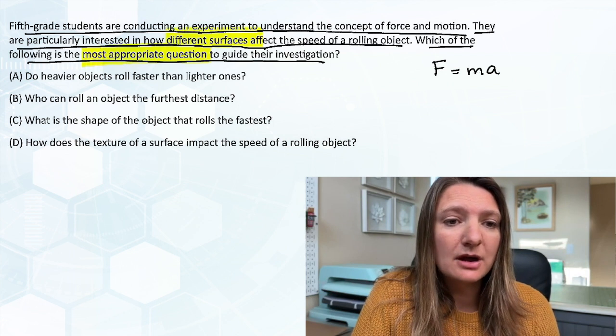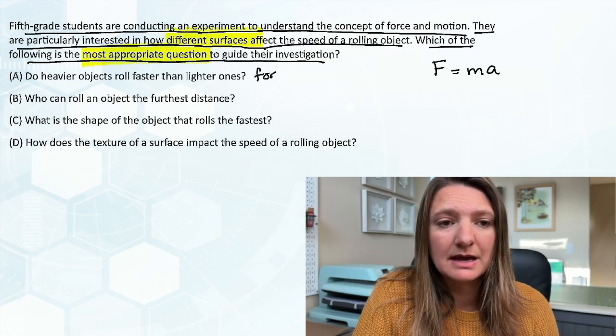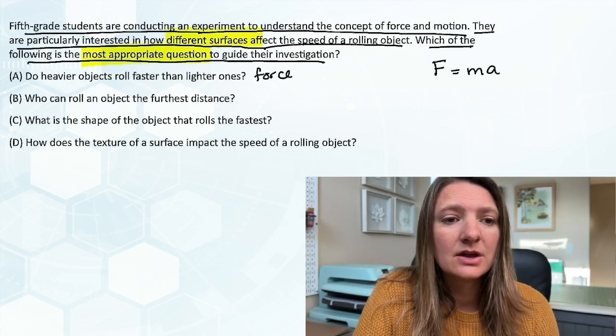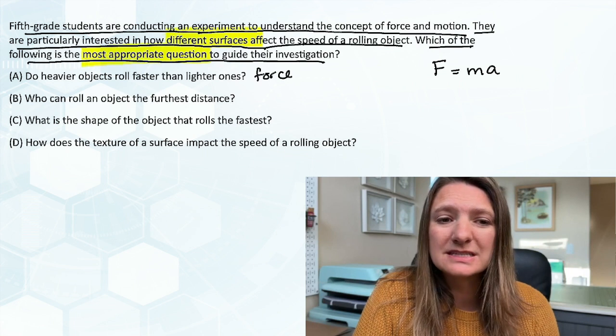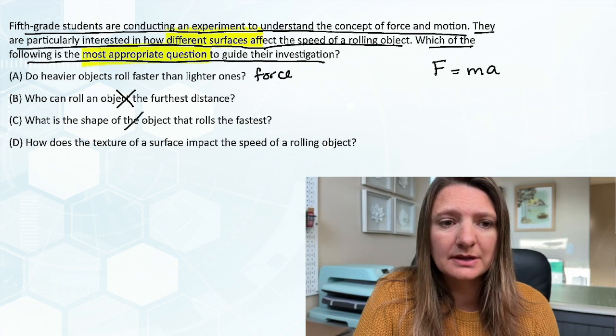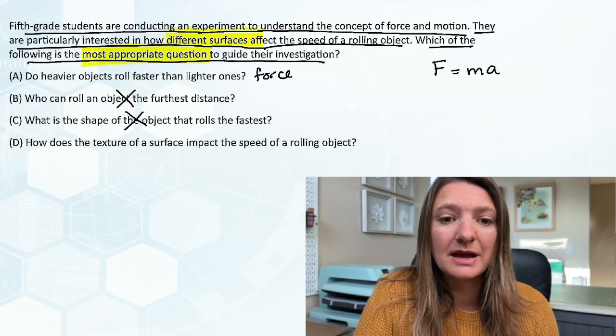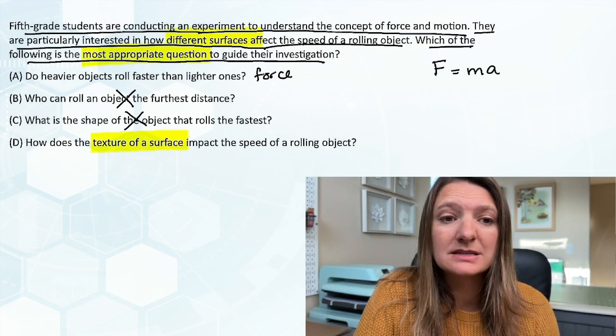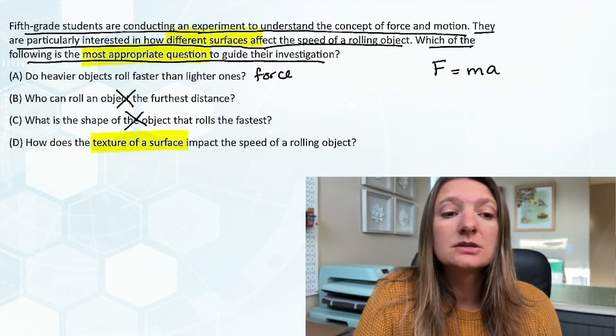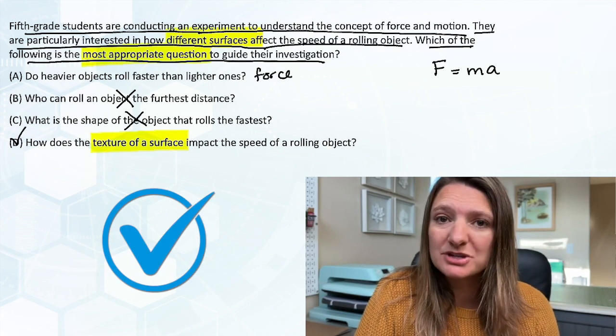So the first one, do heavy objects roll faster than lighter ones? This has to do with force because mass would be how heavy it is, but it doesn't have to do with those surfaces. Who can roll an object the furthest distance? Not really having to do with force. What the shape of the object is, not really having to do with force either. So how does the texture of a surface impact the speed of a rolling object? That has to do with both force and those different surfaces. So our answer will be D. How does the texture of a surface impact the speed of a rolling object?